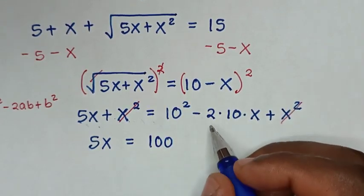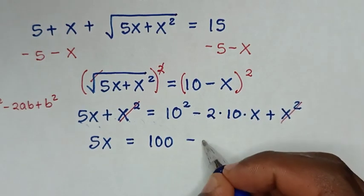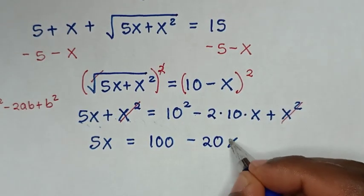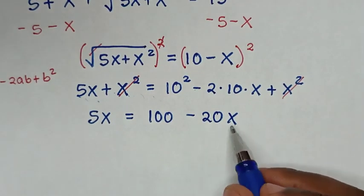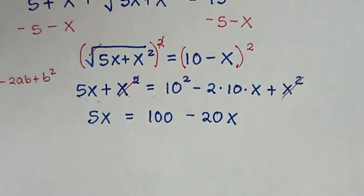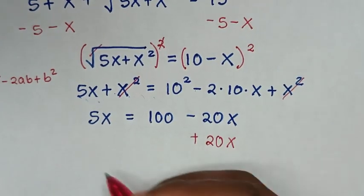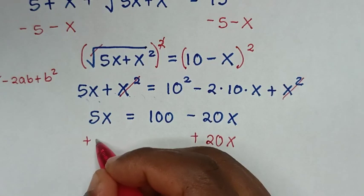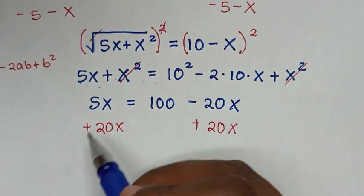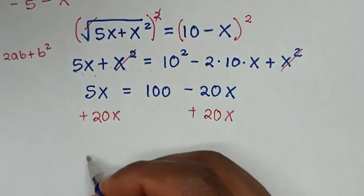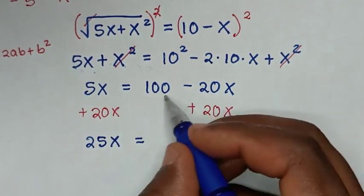then minus 2 times 10 is 20, so it will be minus 20x. We take the negative 20x to the left side by adding 20x on both sides. Our equation becomes 5x plus 20x, which is 25x, is equal to 100.